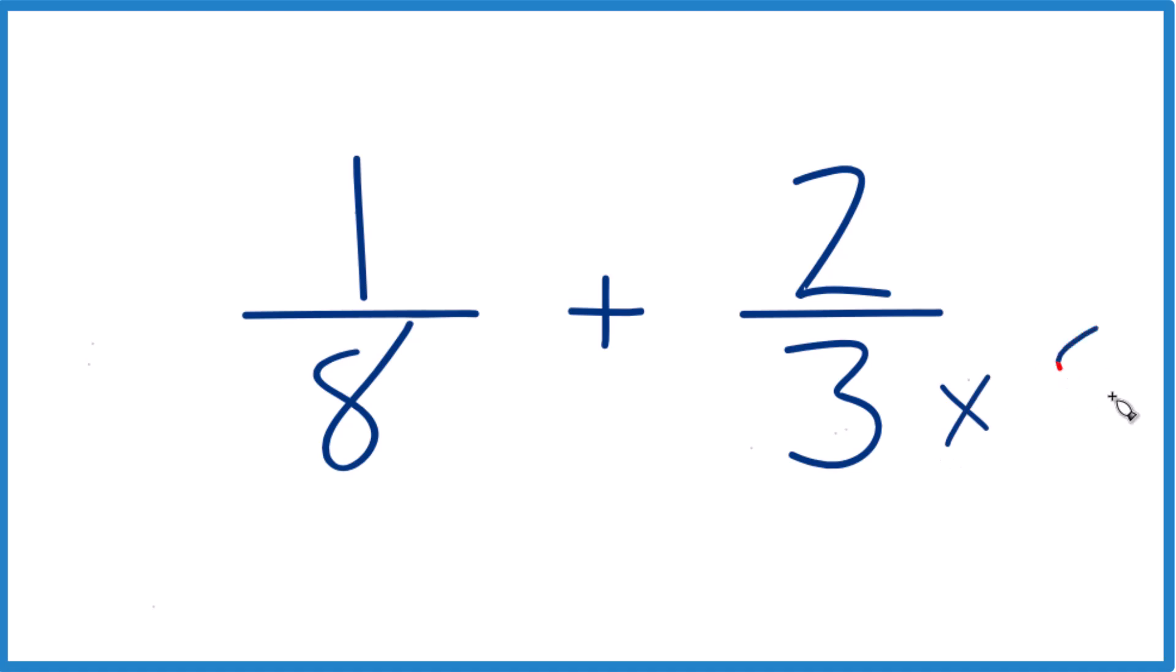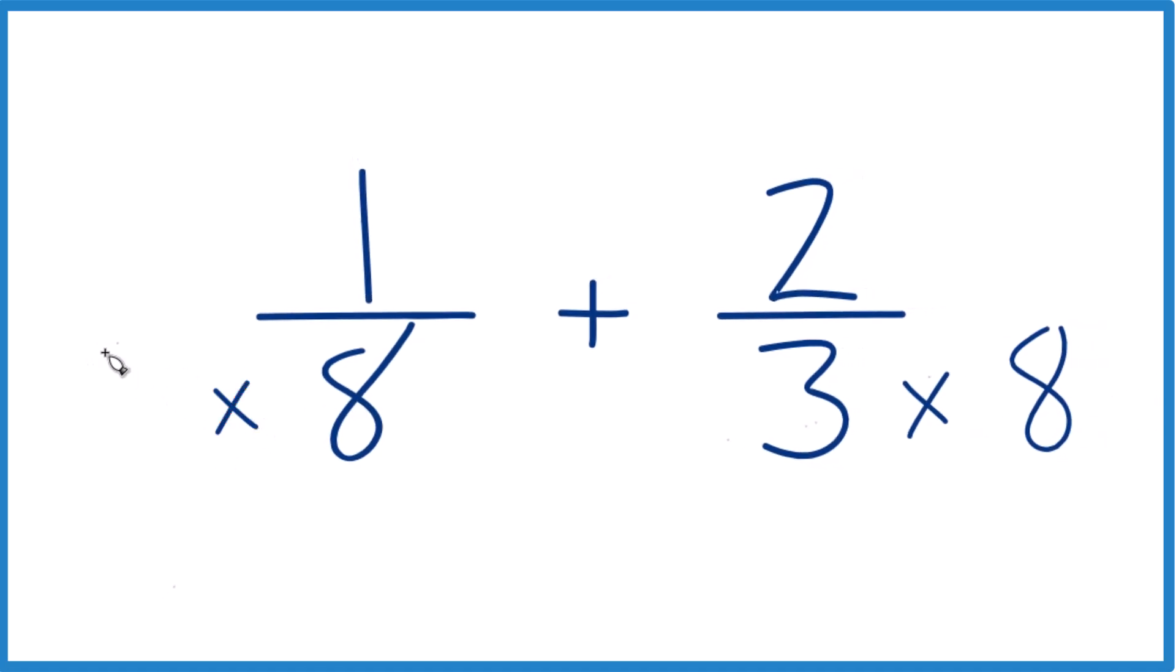So 3 times 8 here, that equals 24, and 8 times 3 here, that equals 24. So we'd have the same denominator.